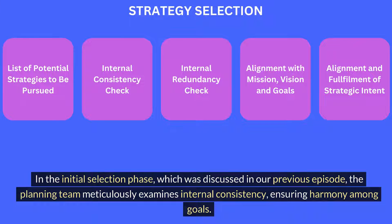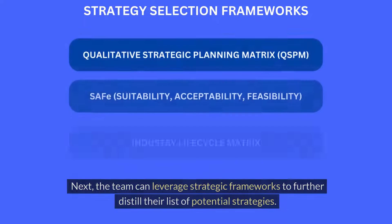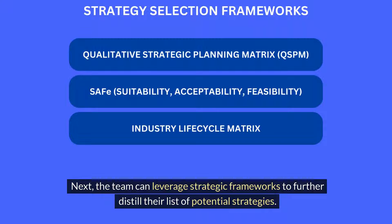In the initial selection phase, discussed in our previous episode, the planning team meticulously examines internal consistency, ensuring harmony among goals. They refine and prioritize strategies based on impact, feasibility, and cost-effectiveness. Redundancies are identified and streamlined to simplify the selection process. Next, the team can leverage strategic frameworks to further distill their list of potential strategies.